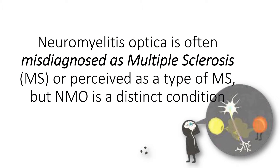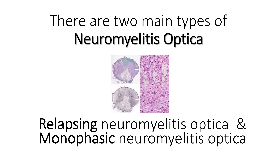Neuromyelitis Optica is often misdiagnosed as multiple sclerosis or perceived as a type of MS, but NMO is a distinct condition. There are two main types of Neuromyelitis Optica: Relapsing Neuromyelitis Optica and Monophasic Neuromyelitis Optica.